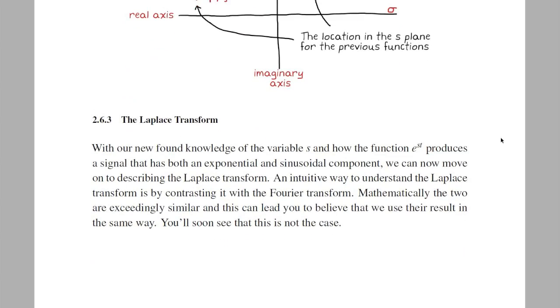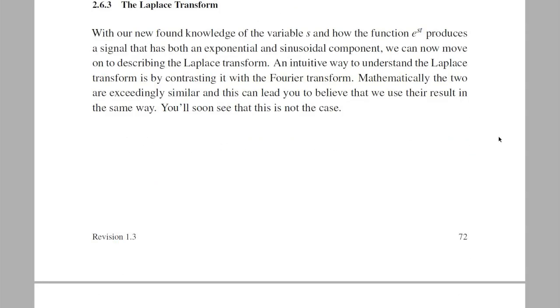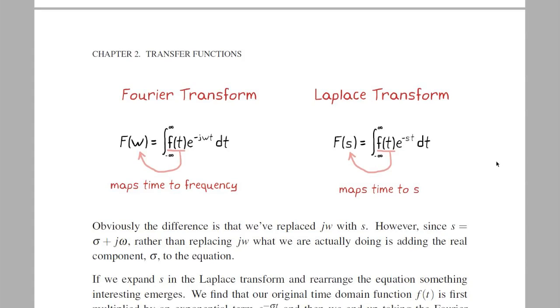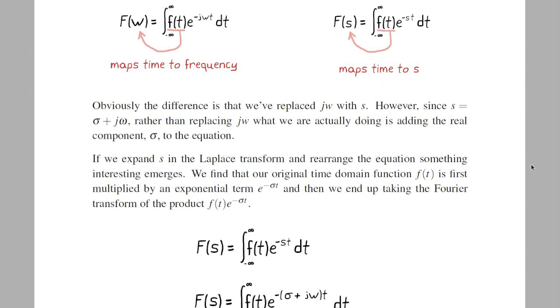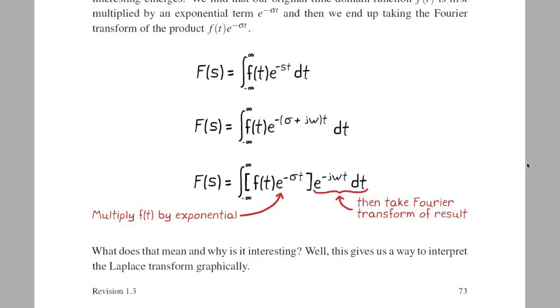Like I said before, let's contrast the difference between Laplace and Fourier. As you can see, the only difference is that we've replaced j omega with s. But since s is sigma plus j omega, really we've just added the real component sigma to the equation. We haven't actually removed anything. All right, now this is kind of cool. If we replace s with sigma plus j omega in the Laplace transform, and then we rearrange the equation, we find something interesting.